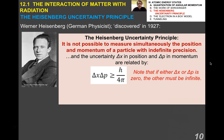He basically said it's not possible to measure simultaneously the position and momentum of a particle with indefinite precision. He figured out a way to relate the two. The uncertainty delta x in position and the uncertainty delta p in momentum are related by this expression. Delta x delta p is greater than or equal to h over 4 pi, h being Planck's constant. Note that if either delta x or delta p is zero, the other must be infinite.